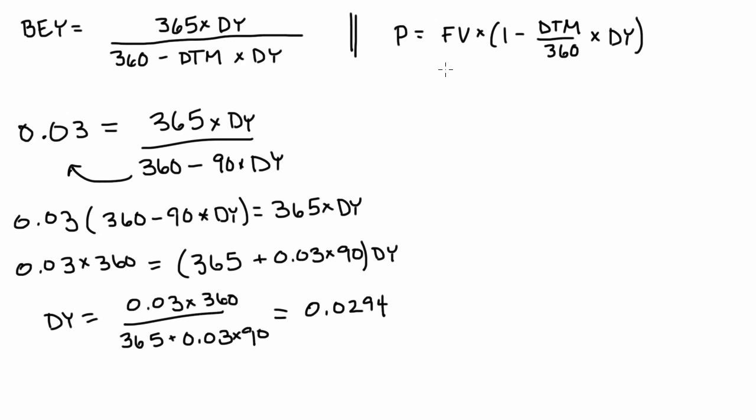For this, we use this formula over here. So the price of the t-bill is going to be equal to the face value, which we're given is $100.